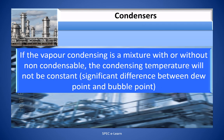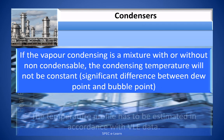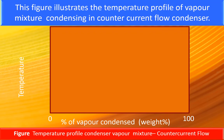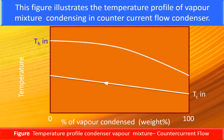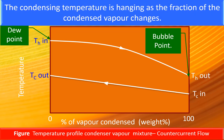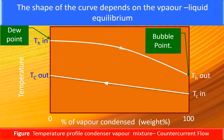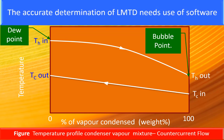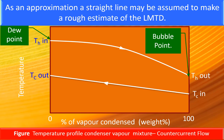If the vapor condensing is a mixture with or without non-condensables, the condensing temperature will not be constant. The temperature profile must be estimated in accordance with VLE data. The condensing temperature changes as the fraction of condensed vapor changes, and the shape of the curve depends on the vapor-liquid equilibrium. Accurate determination of LMTD requires software; as an approximation, a straight line may be assumed to make a rough estimate of the LMTD.